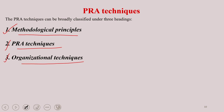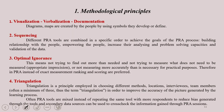Within methodological principles, visualization of the entire process is very important — achieved through different kinds of diagrams and maps created by the people or jointly with you, including resource maps and social maps. Next is sequencing — different PRA tools are combined in a specific order to achieve the goals of the exercise, including building rapport and enhancing community capacity. Optimal ignorance and triangulation are also key methodological principles already discussed.